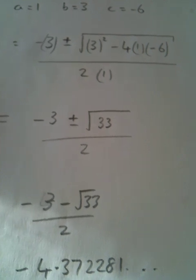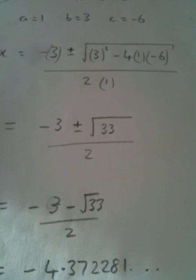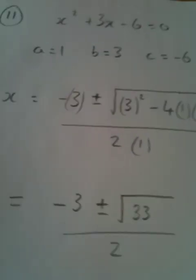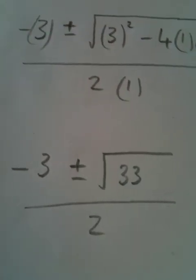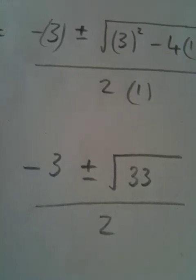The reason why I've put the brackets in, if you type that into your calculator, the calculator will do it all for you. You won't make any silly mistakes. So we've got negative 3 plus or minus the square root of 33 all over 2. Plus or minus is because there are two solutions to it.